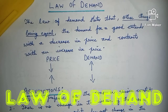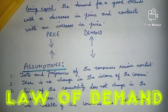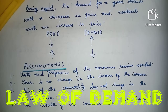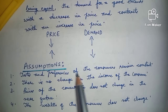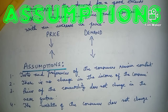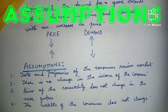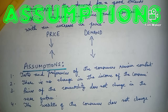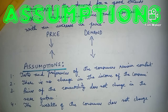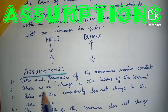We have to assume certain things in the law of demand. There are four assumptions in this law. Number one: taste and preferences of the consumers remain constant. The law of demand holds when other things remain the same — factors influencing demand other than price are assumed to be constant. Only price is changing, but taste and preferences of consumers are assumed to be constant.